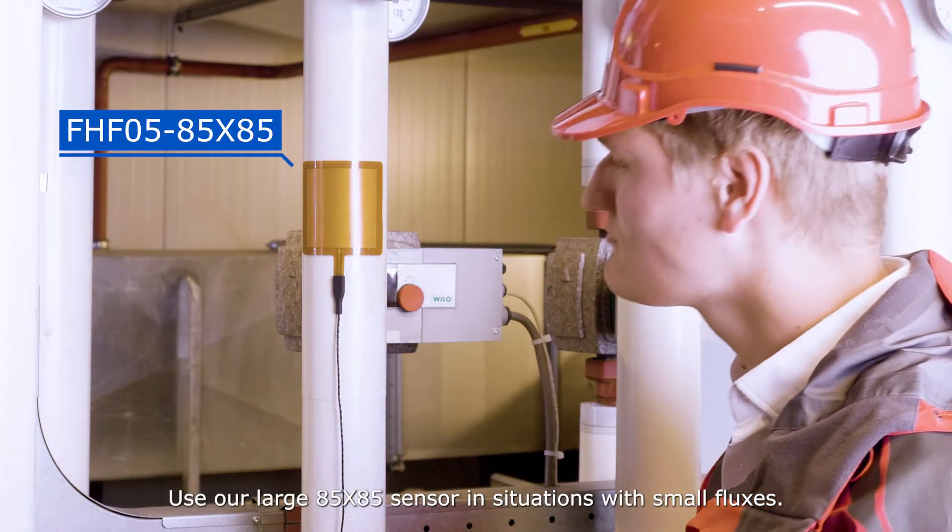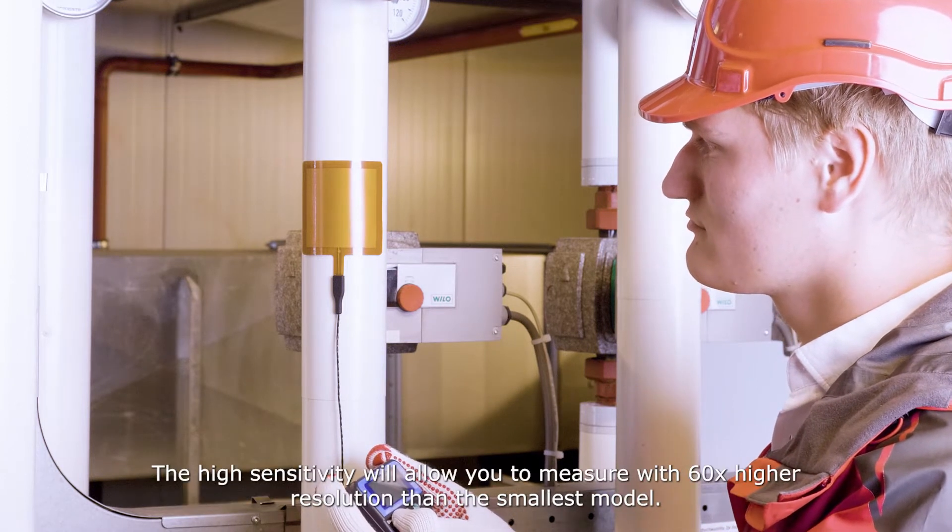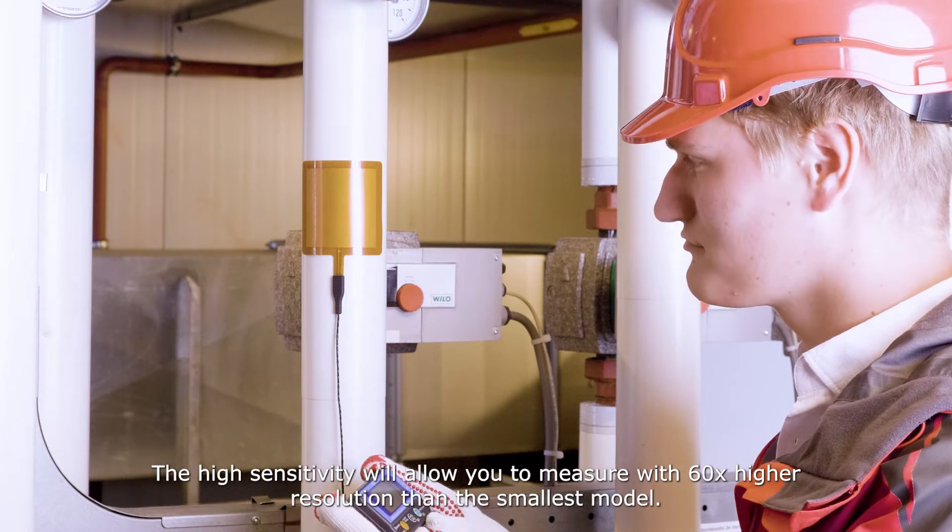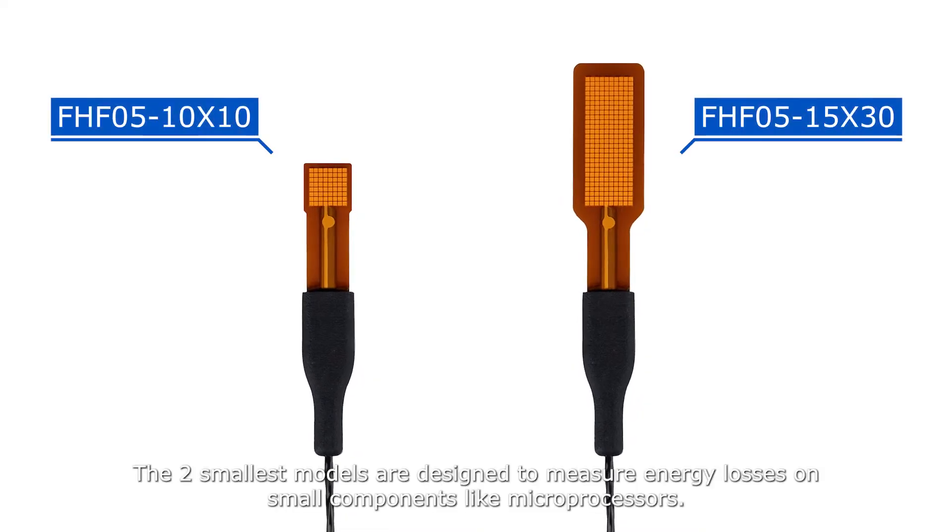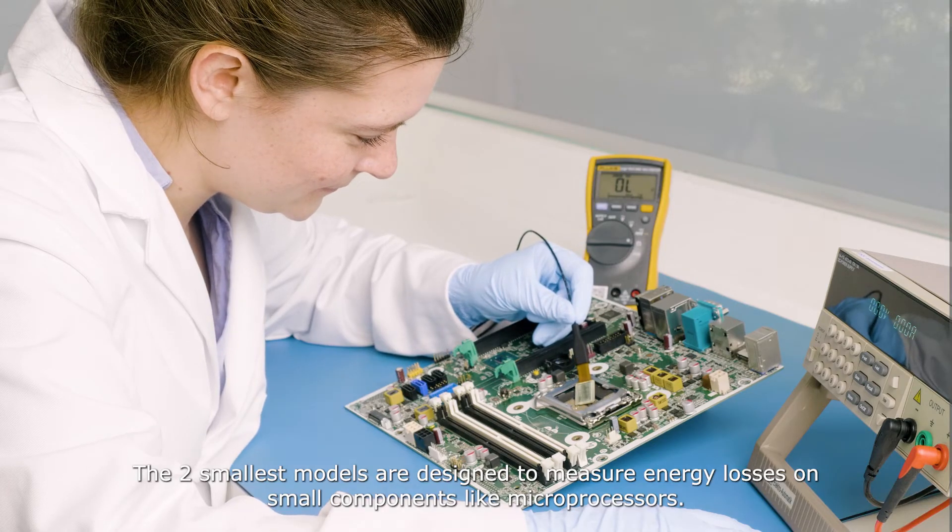Use our large 85x85 sensor in situations with small fluxes. The high sensitivity will allow you to measure with 60 times higher resolution than the smallest model. The two smallest models are designed to measure energy losses on small components like microprocessors.